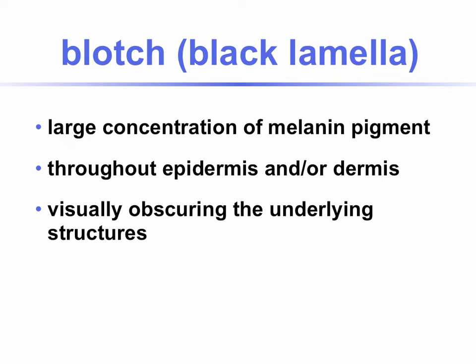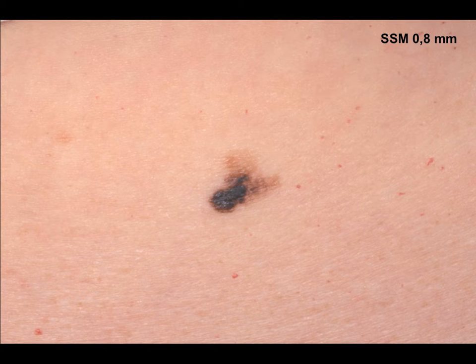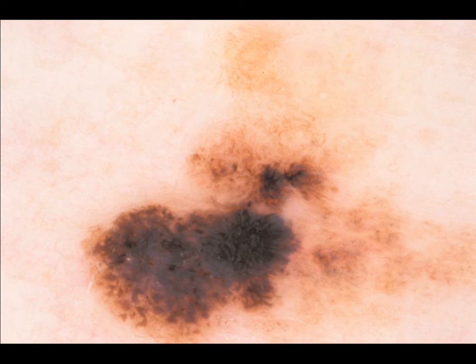Pigmented Spitz nevus. Blotch, or black lamella, corresponds to a large concentration of melanin pigment throughout the epidermis and/or dermis. Because there is so much melanin pigment, you visually obscure the underlying structures — you just see black. This is what we call a blotch. In the example of a superficial spreading melanoma at 0.8 mm, dermoscopy shows in the lower center of the lesion just black, homogeneous structures — this is what we call a blotch.